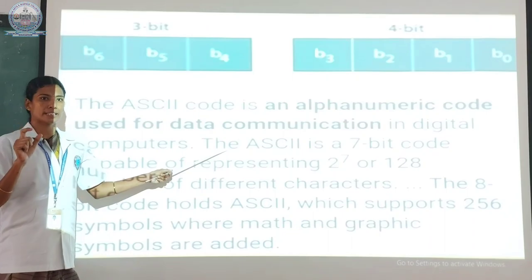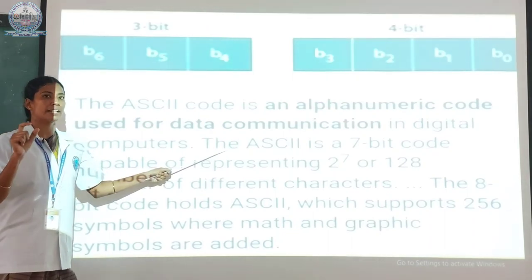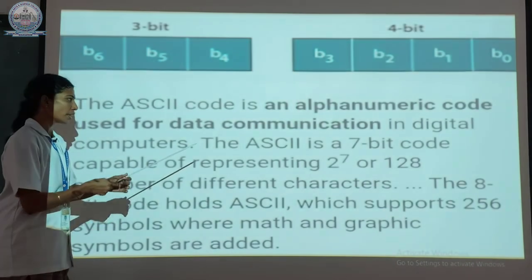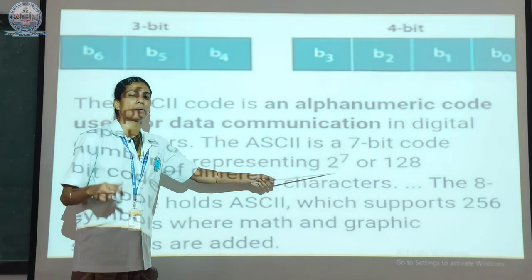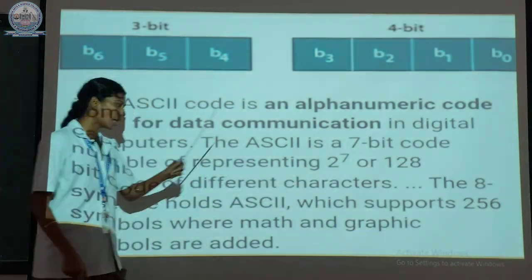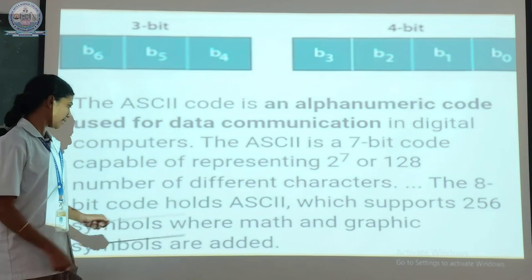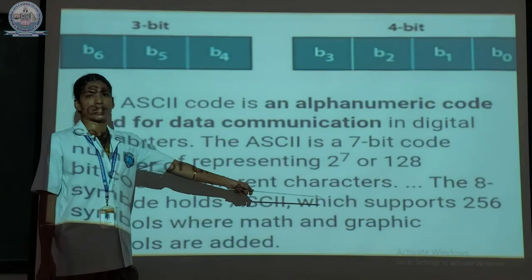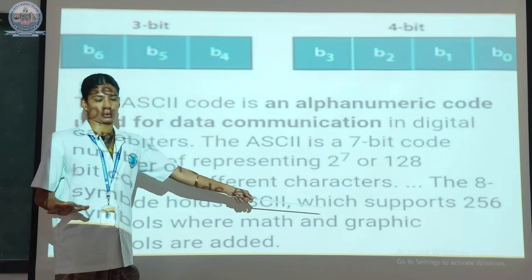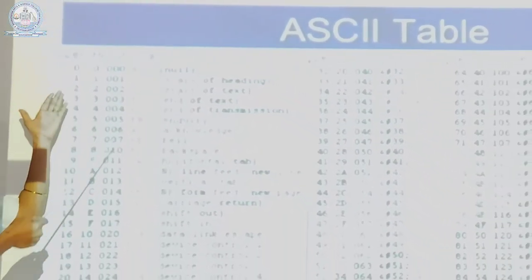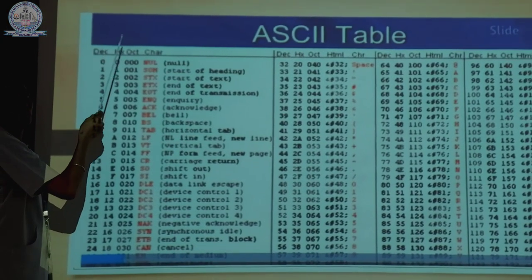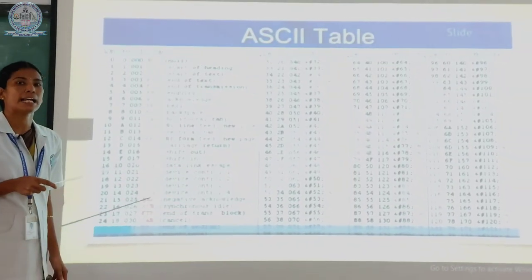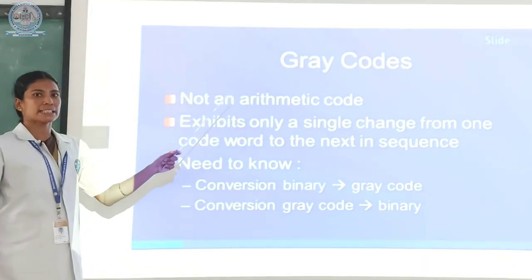The ASCII code is represented as ANSI — American National Standard Institute. The 7-bit code represents 2 power 7, meaning 128 characters are present. Otherwise, 2 power 8 means 256 characters are represented in ASCII code. The tables show how many binary numbers and how many octal numbers — octal and hexadecimal are represented in characters using ASCII code.